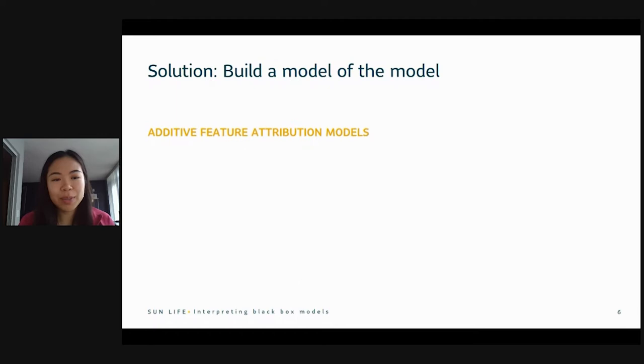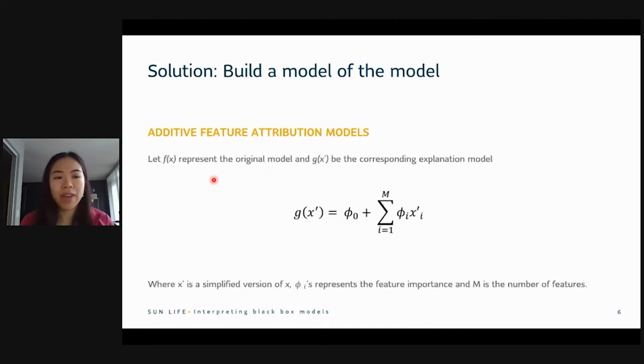And so the smarter data scientists than myself have come up with a solution to this. And the idea is to build a simple model on top of the complex model. So let's suppose f of x is the original complex model. That's the one that we spent hours and days and maybe weeks building. What we want to do is we want to build a simple model, g of x, that approximates the original model, f of x, just to help with the explaining part. It's not doing the prediction, it's just doing the explanation. So here, g of x is the sum of these phis. These phis represent the weight of each feature. And note that g of x is linear. And that's key because linear models are easy to interpret.